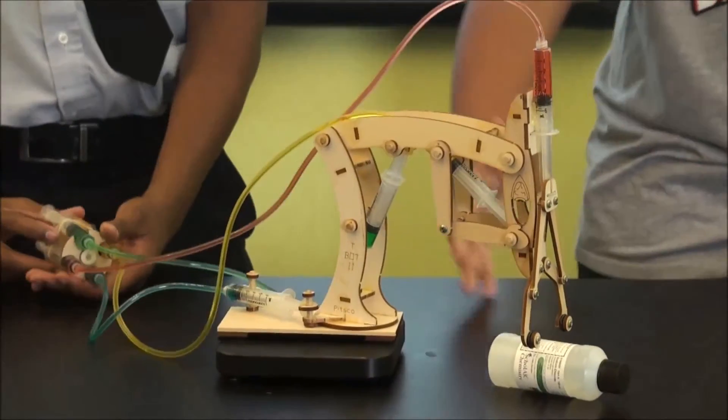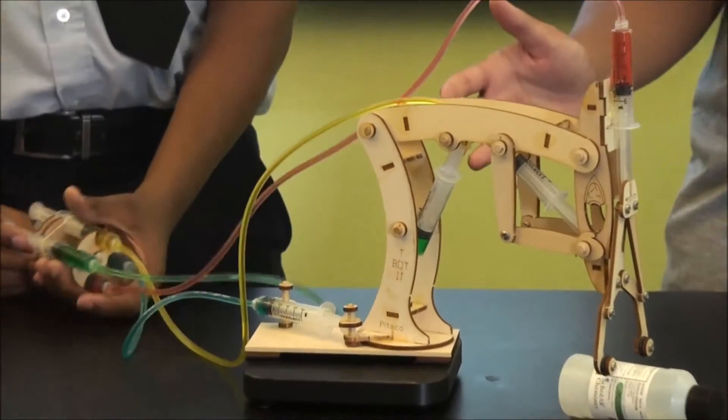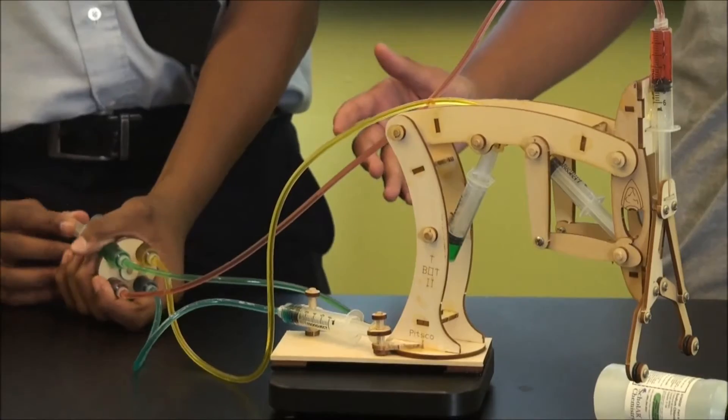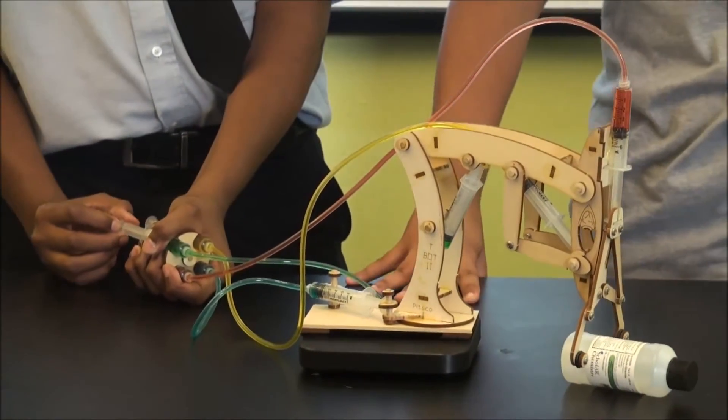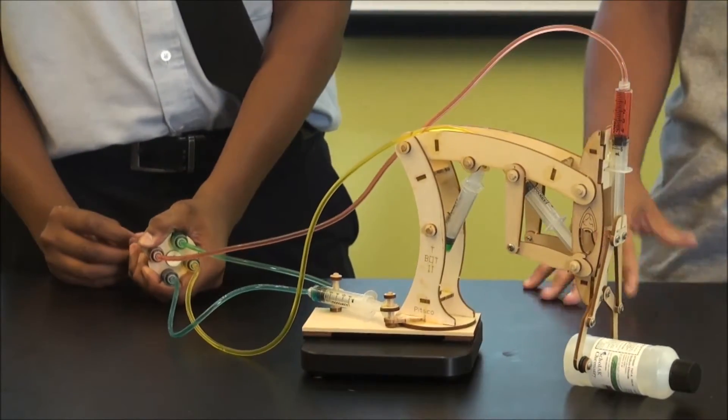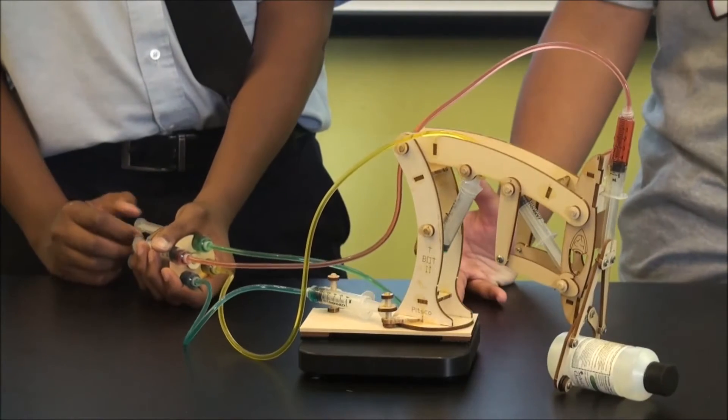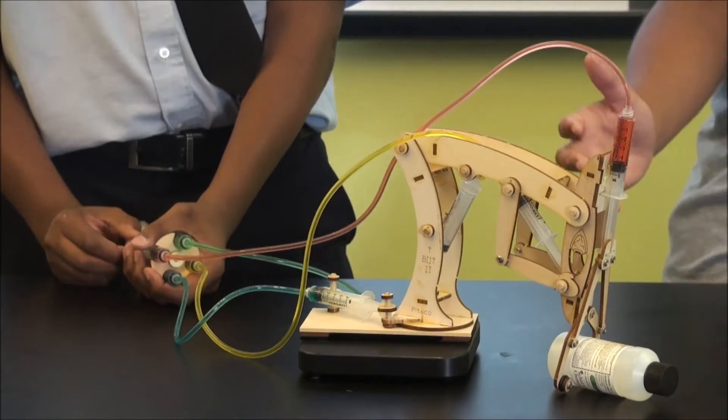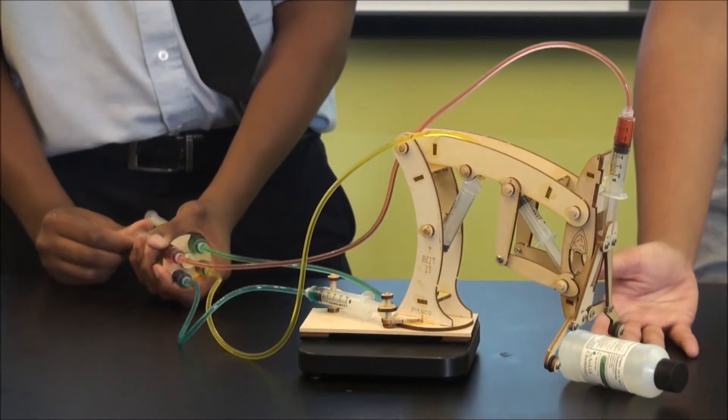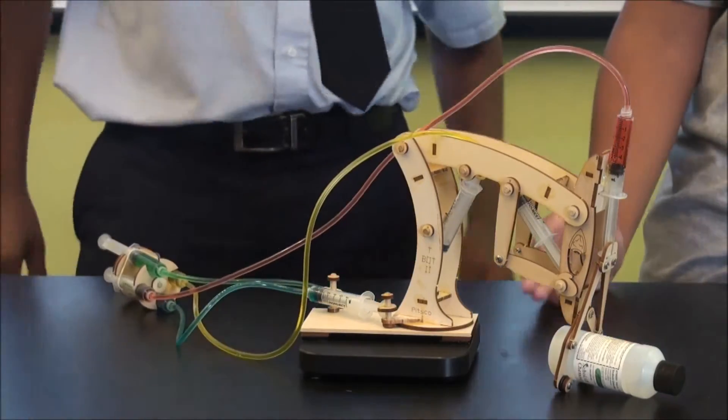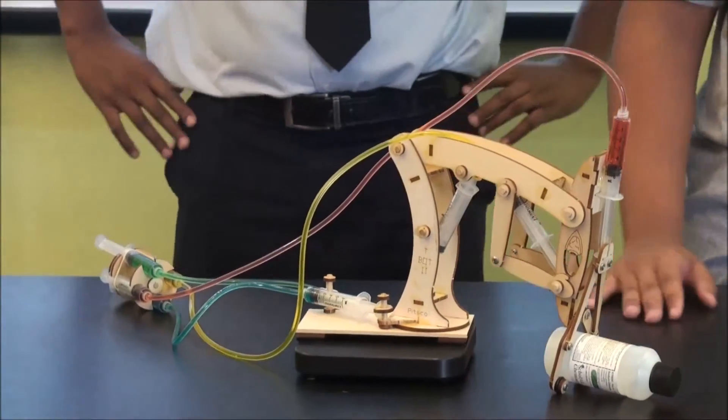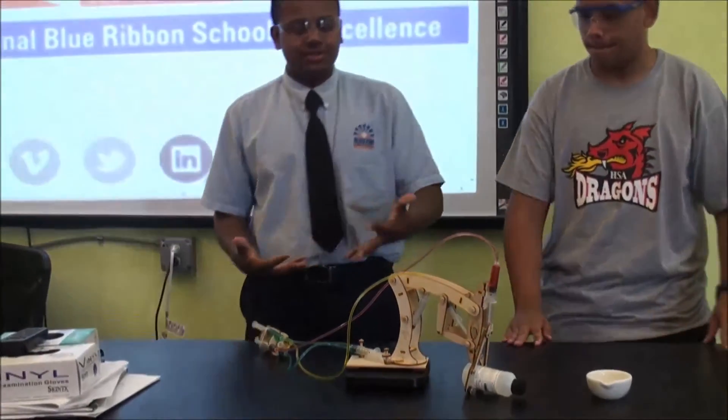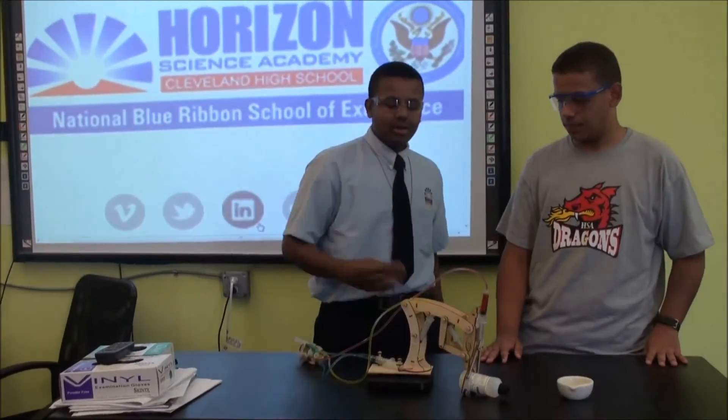Now, this T-Bot has a third class lever. The lever is called a lever arm and that helps the robot catch this solution that's right here and also move along swiftly and easily. Now I want to show you guys how to work the T-Bot.